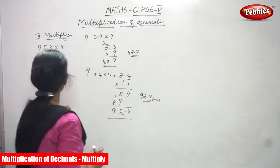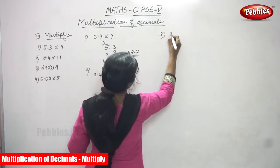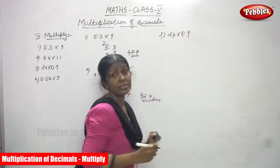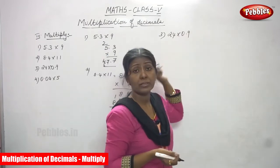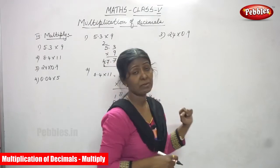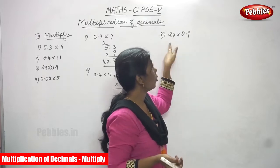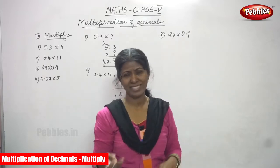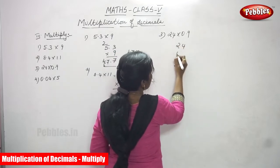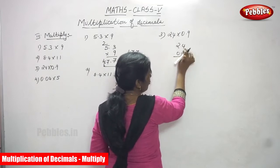The next, third sum, is 24 into 0.9. Generally we have been doing decimal with whole number. Here it is whole number with decimal — it's almost the same. So 24 is a whole number and 0.9 is the decimal.